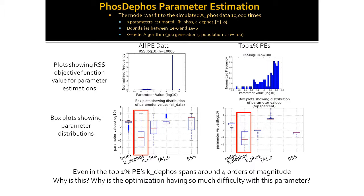On the left here we have all the parameter sets. What I want to highlight with this slide is that when you look at all of the data together — the distribution of the parameters — if you look at the K-Dphos parameter, we span four orders of magnitude. And if you look at the top 1% of parameter estimation runs, the K-Dphos parameter still spans four orders of magnitude. So why is the optimization process having so much difficulty with this parameter?